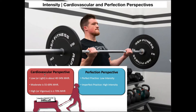From a cardiovascular perspective, low or light intensity might be between 40 and 54 percent of maximum heart rate. Moderate cardiovascular intensity might be between 55 and 69 percent. And then vigorous high intensity motor practice would be greater than 70 percent of maximum heart rate.